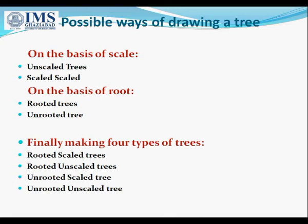In unscaled trees, the length is not proportional to the number of changes. Sometimes the changes are indicated on the branches with numbers. The nodes represent the divergence event on a time scale. In scaled trees, the length of the branch is proportional to the number of changes, and the distance between two species is the sum of the length of the branches connecting them.